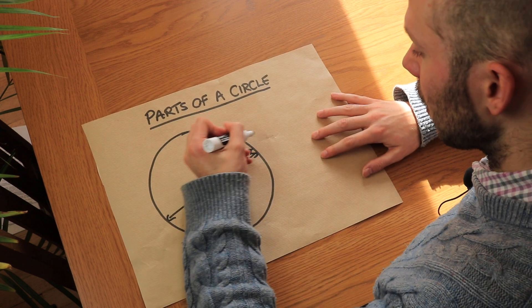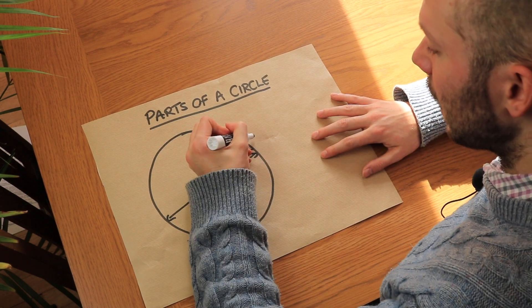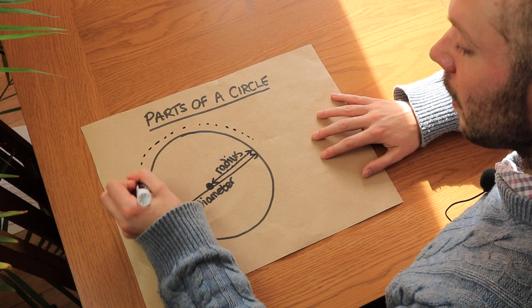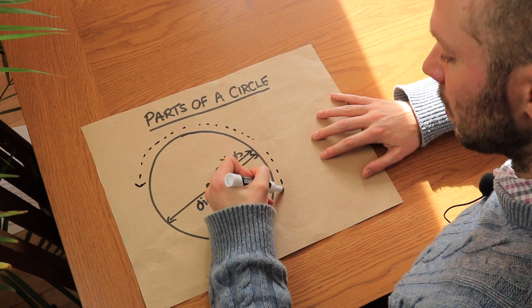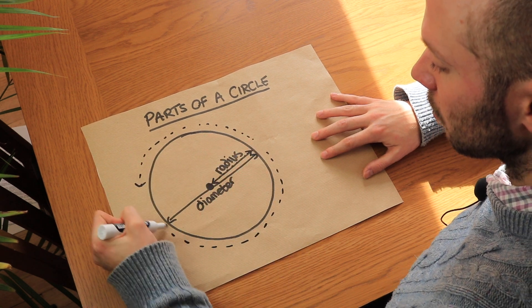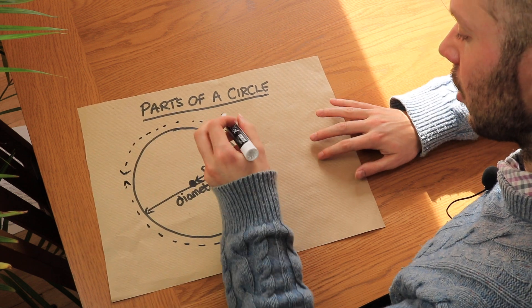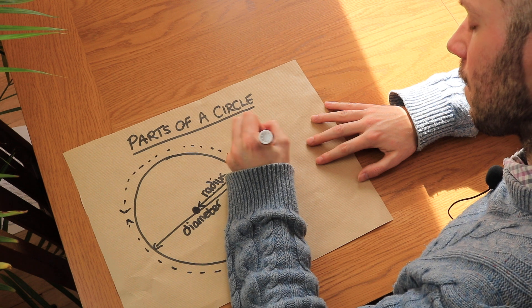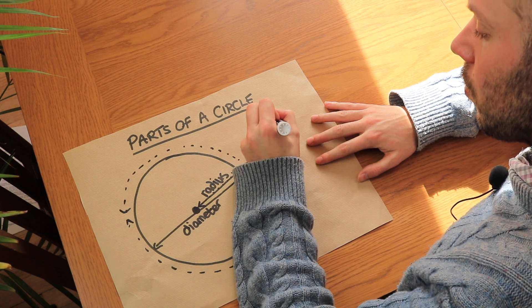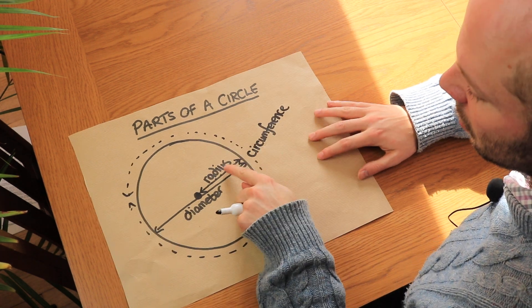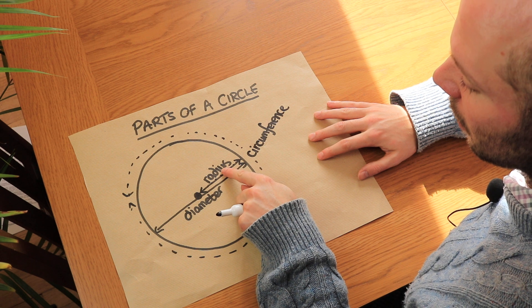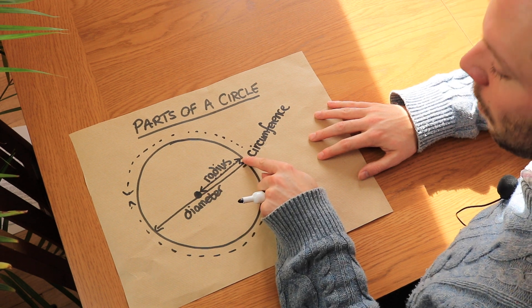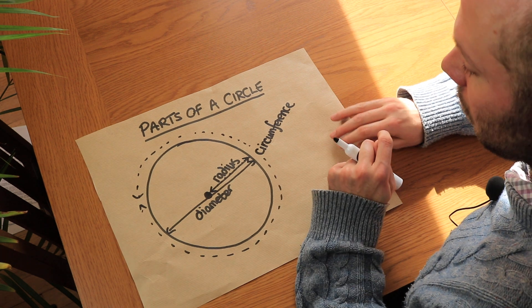There's an actual name for the edge of the circle. This whole line — the whole perimeter of the circle, the line that goes around it — is known as the circumference. Therefore, a more technical definition of the radius is: it's a line that connects the center of the circle to a point on the circumference of the circle.